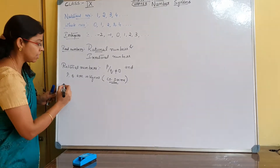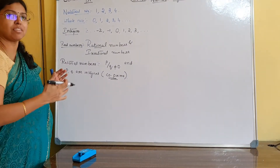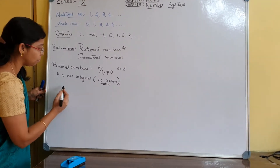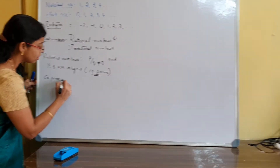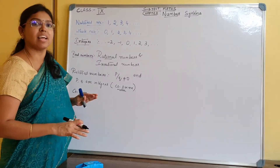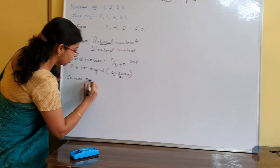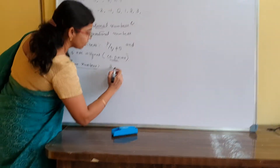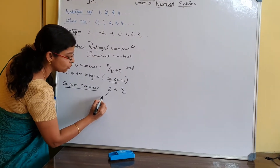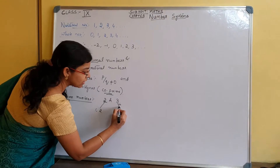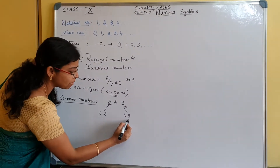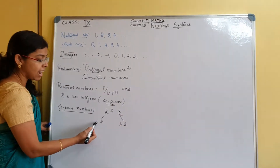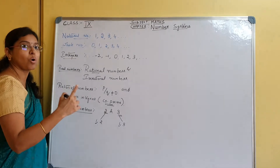What do you mean by co-prime numbers? We have already learnt what a rational number is and done addition and subtraction with rational numbers in earlier class. Co-prime numbers are those which do not have a common factor other than 1. For example, take 2 and 3. The factors of 2 are 1 and 2; the factors of 3 are 1 and 3. The common factor is only 1 — they do not have a common factor other than 1. Therefore, we can call 2 and 3 co-prime numbers.